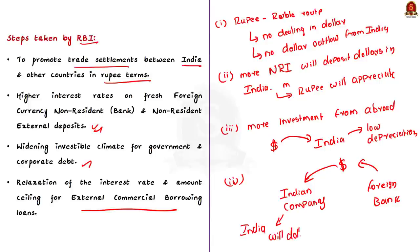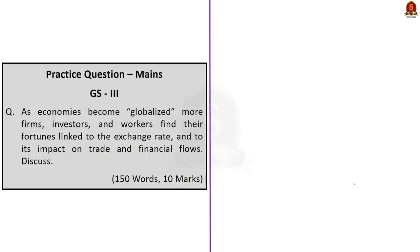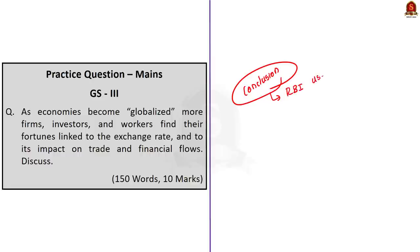So the four steps taken by the RBI are: first, promoting trade settlement in rupee terms; second, giving higher interest rates to attract NRI investment; third, creating a better investment climate to attract foreign investment; and fourth, encouraging Indian corporates to use external commercial borrowing. The author concludes that the current rupee depreciation is due to global uncertainty, high commodity prices, and rising US interest rates. In addition to all these steps, the RBI must also take timely forex market intervention to arrest the volatility of the Indian rupee.